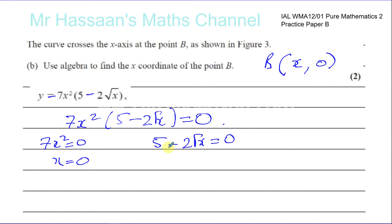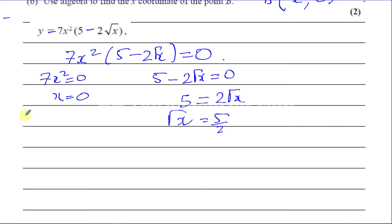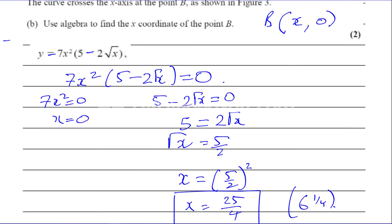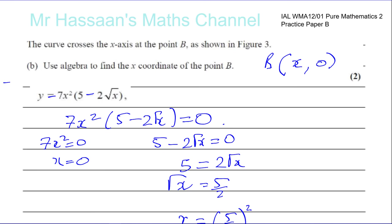Since 5 minus 2 root x equals zero, we get 5 equals 2 root x, so root x equals 5 over 2. Squaring both sides gives x equals 25 over 4, which is 6 and a quarter. The question only asks for the x-coordinate of B, so the answer is x equals 25 over 4.